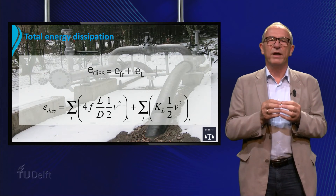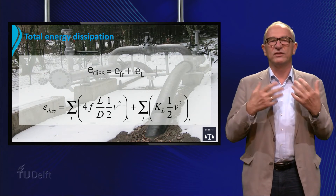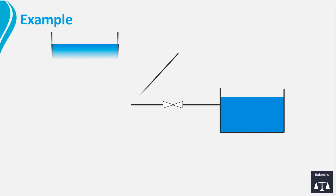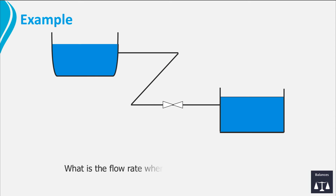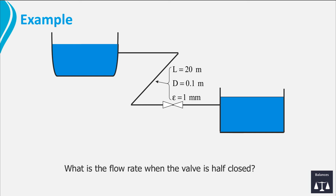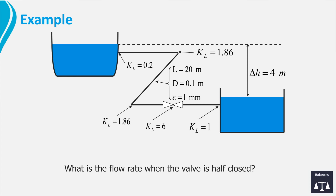Let's illustrate this result by applying it to an example of a simple pipe system. From an open basin, water flows by gravity into an open tank. As illustrated, the pipeline system contains two sharp 60-degree bends and a valve for controlling the flow rate. We could ask: what is the flow rate when the valve is half closed? To answer this question we need extra information about the length, the diameter, pipe roughness and height of the basin, and the values of the loss coefficient of the bends, valves, and the entrance and exit of the pipe.